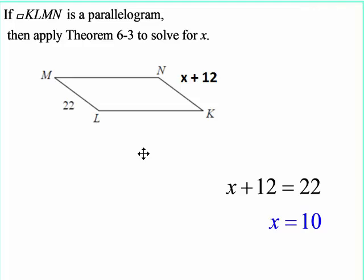So now we're going to apply all these theorems that we just learned. If this is a parallelogram and we're going to apply theorem 6-3, then that would mean that the opposite sides are congruent. And so you set x plus 12 is equal to 22 and subtract 12 from each side and you get x is 10.